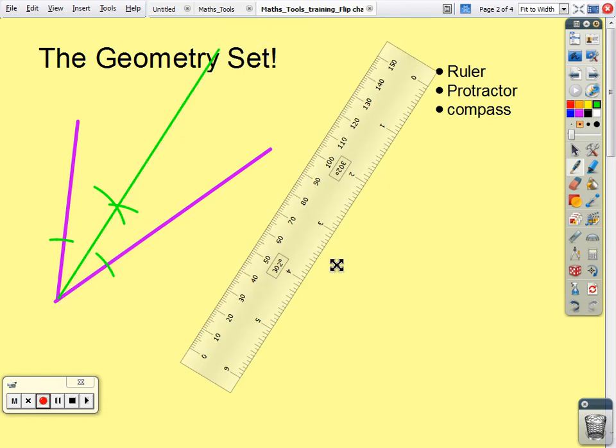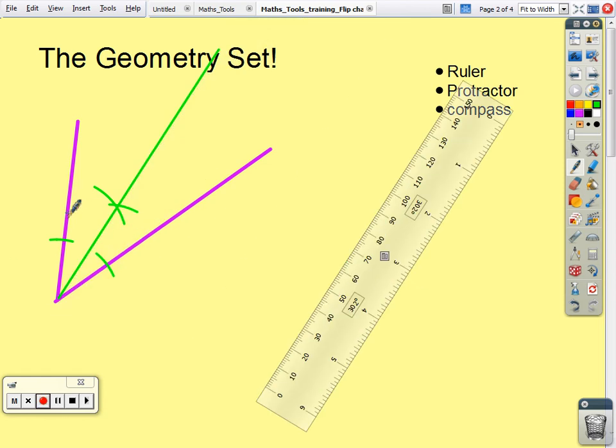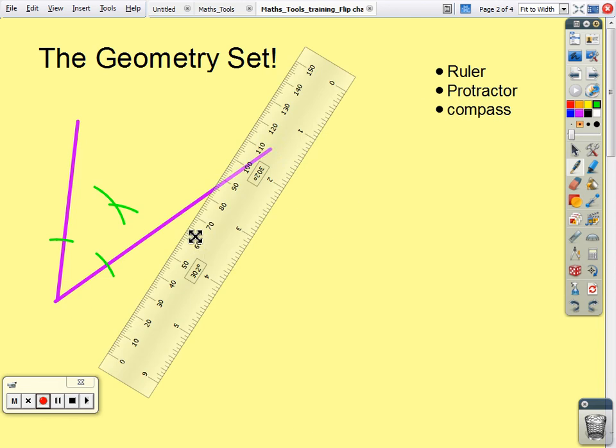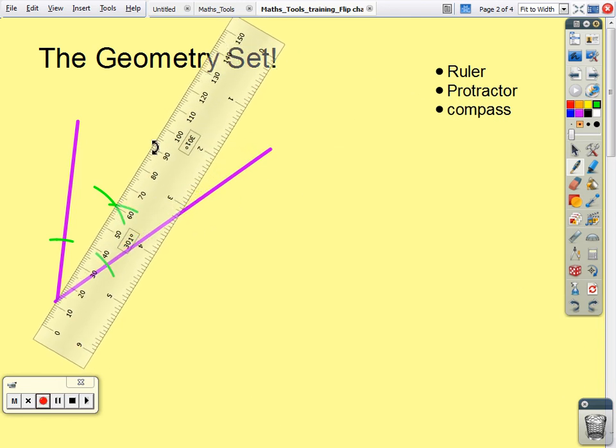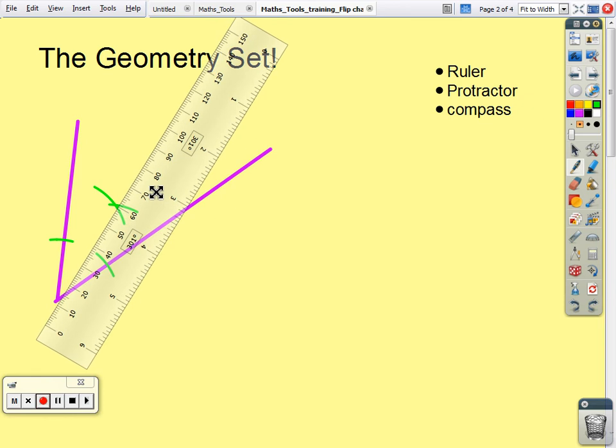We have now bisected that angle. That angle there should be equal to that angle there. I'm not entirely happy with that, so I think we're going to undo that line drawing. I think if we're going to bother to teach this we might as well do it fairly accurately.